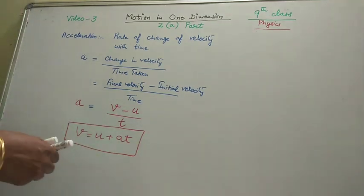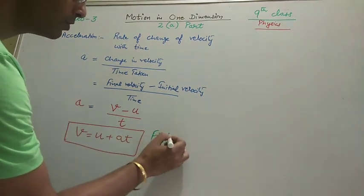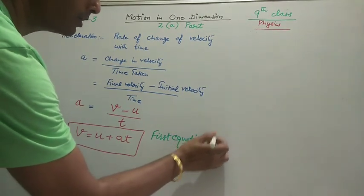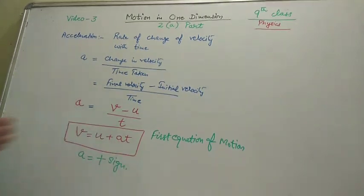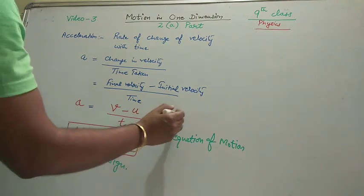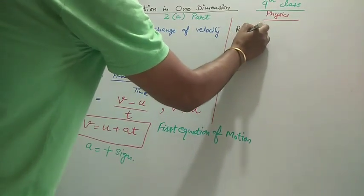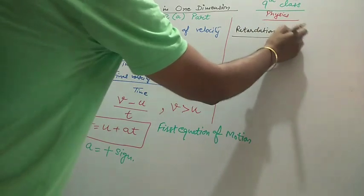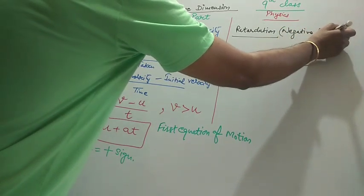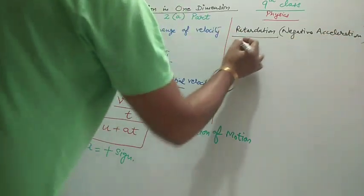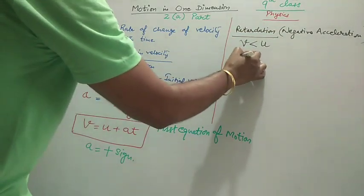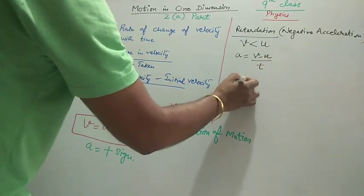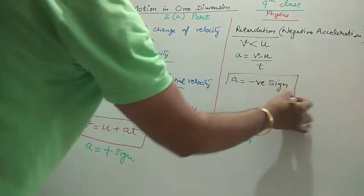This is also called the first equation of motion. When acceleration is positive, v is always greater than u. For retardation — also called negative acceleration — v is less than u because the motion is being slowed down, so acceleration equals (v minus u) divided by t and comes with a negative sign.